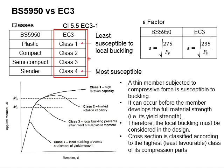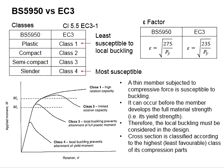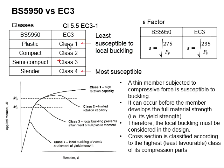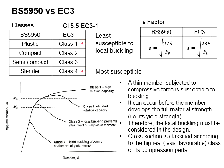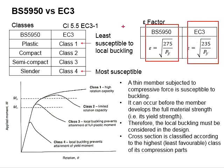For section classification, Eurocode 3 classifies sections into Class 1, Class 2, Class 3, and Class 4, which in BS5950 terminology correspond to plastic, compact, semi-compact, and slender sections. Class 1 sections are the least susceptible to local buckling, while Class 4 is the most susceptible. The limits used to determine classification are governed by axial slenderness factors, and the definitions in BS and Eurocode 3 are also different.